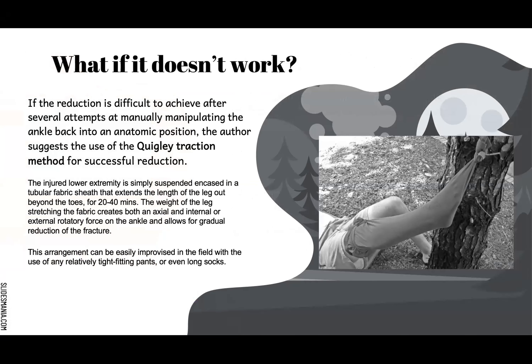If reduction is not possible after several attempts, the Quigley traction method can always be used. Basically, the lower extremity that is dislocated is suspended by the toes. Any long socks or clothing can be used to tie the leg out, suspended for about 20 to 40 minutes. Multiple studies have proved this causes axial internal pressures which push everything back into place within 20 to 40 minutes.